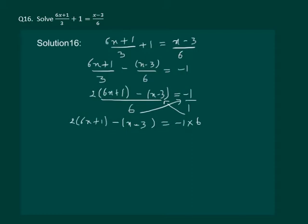Let us open the bracket, we get 2 into 6x plus 2 into 1 is 2 minus x plus 3 equal to minus 6.